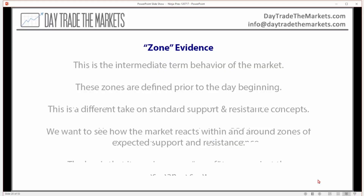The second part is what I call zone evidence, and this is basically an intermediate term behavior of the market. These are defined before the day begins, so we know what these are prior to the day starting. This is a different take on support and resistance, supply and demand zones, or things like that — and I found it to be very effective.